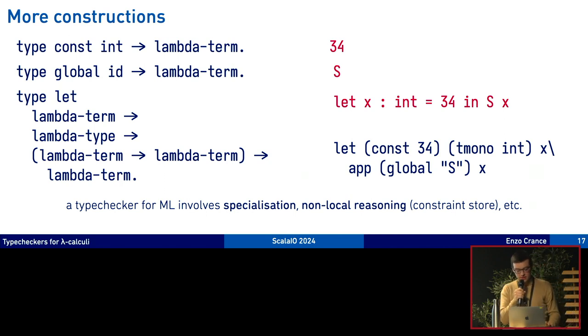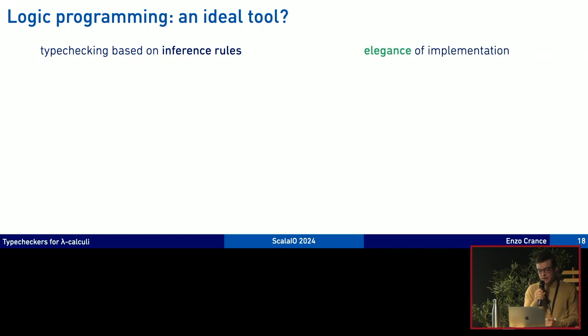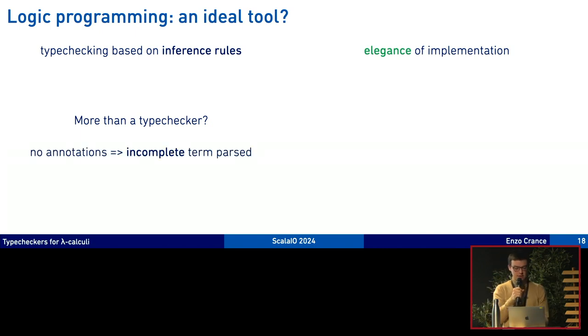A full type checker for the ML fragment requires some specialization. If a term has a polymorphic type it can be used in the context like a weaker context where the types are specialized. It requires some non-local reasoning as well. These are technical details but the thing to remember is that at the heart of the algorithm it's still based on inference rules. In a logic programming it's very elegant in the implementation, very short. And we can do more than a type checker because as ML doesn't require all types to be annotated, it means that when the user enters a type it's incomplete. It lacks some type annotations. So the type checker is actually more than a type checker because it does both checking and inference.